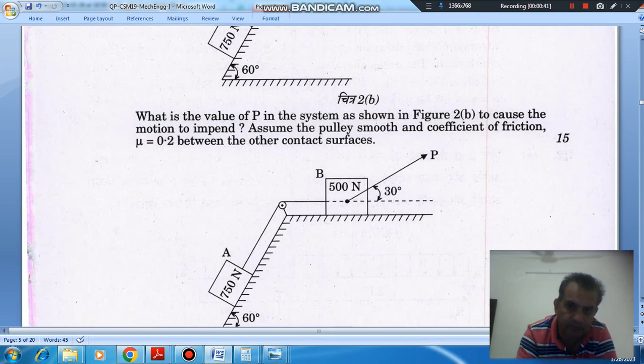So it has two components, P cos 30 and P sin 30, horizontal component and vertical component.